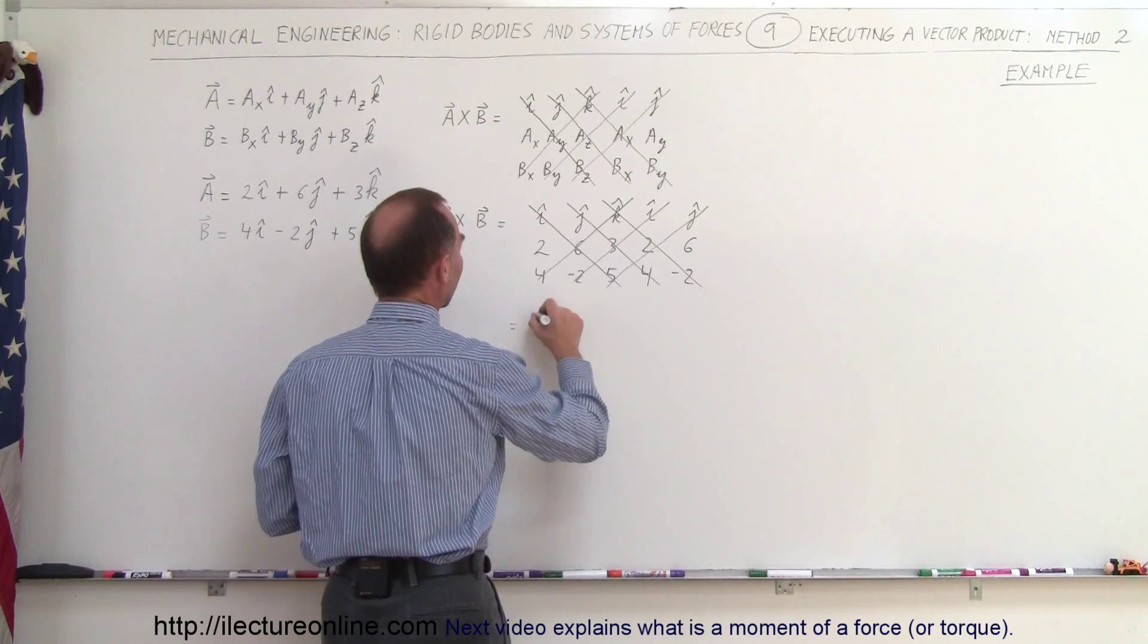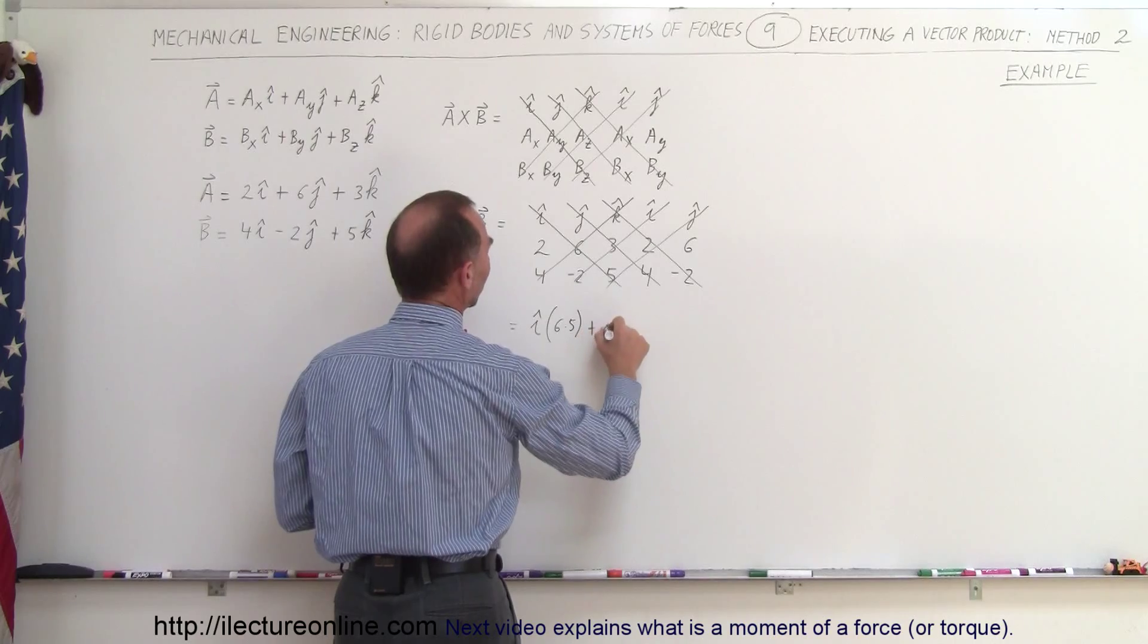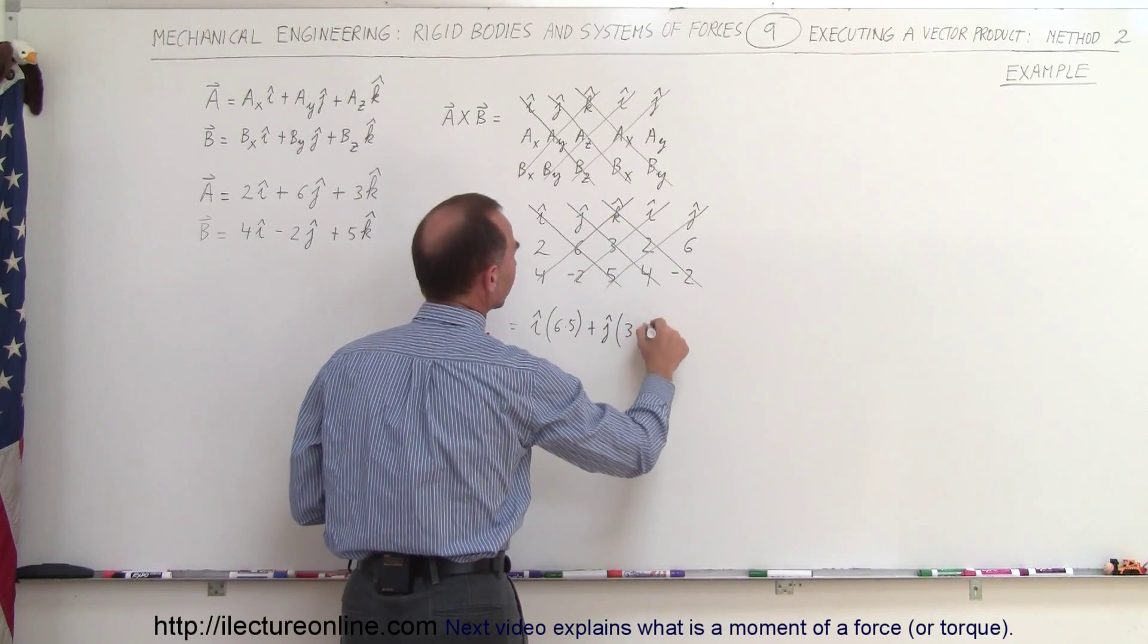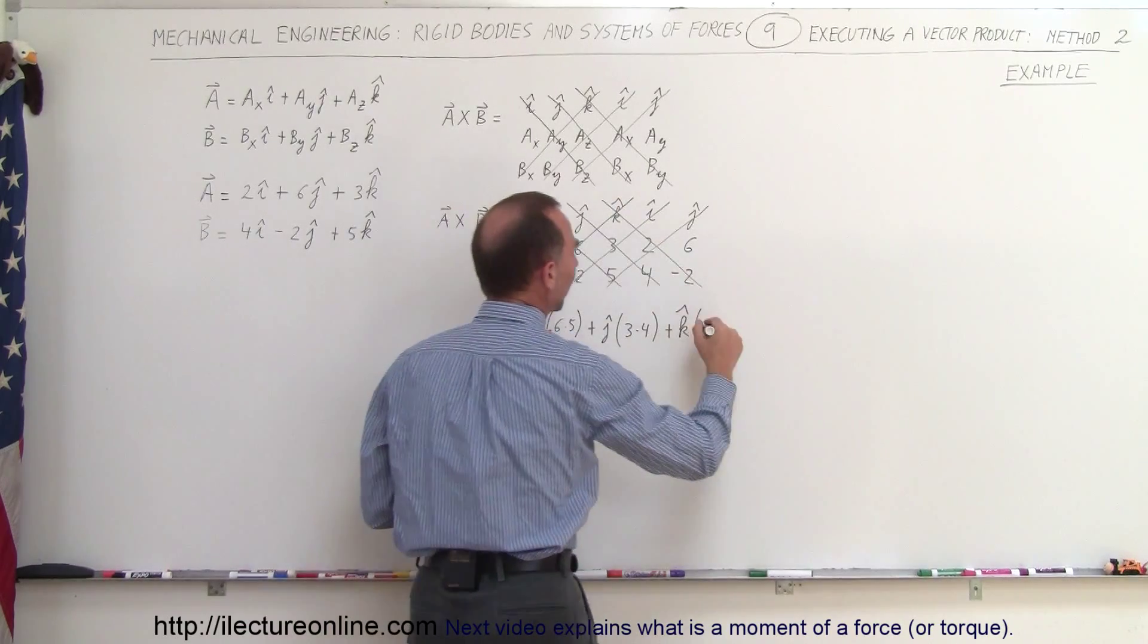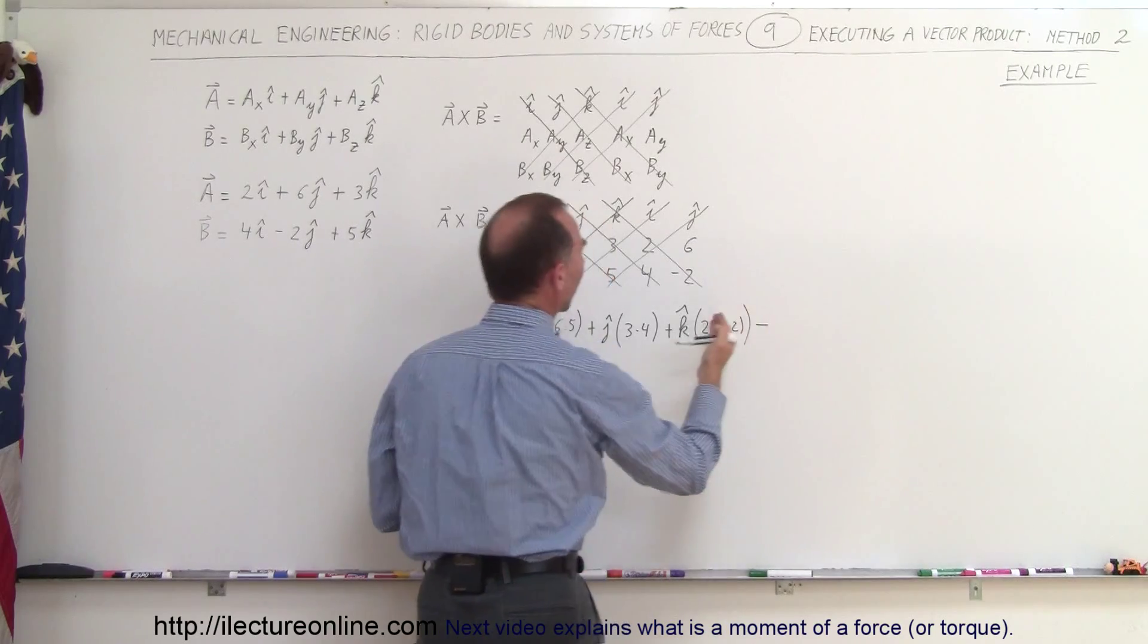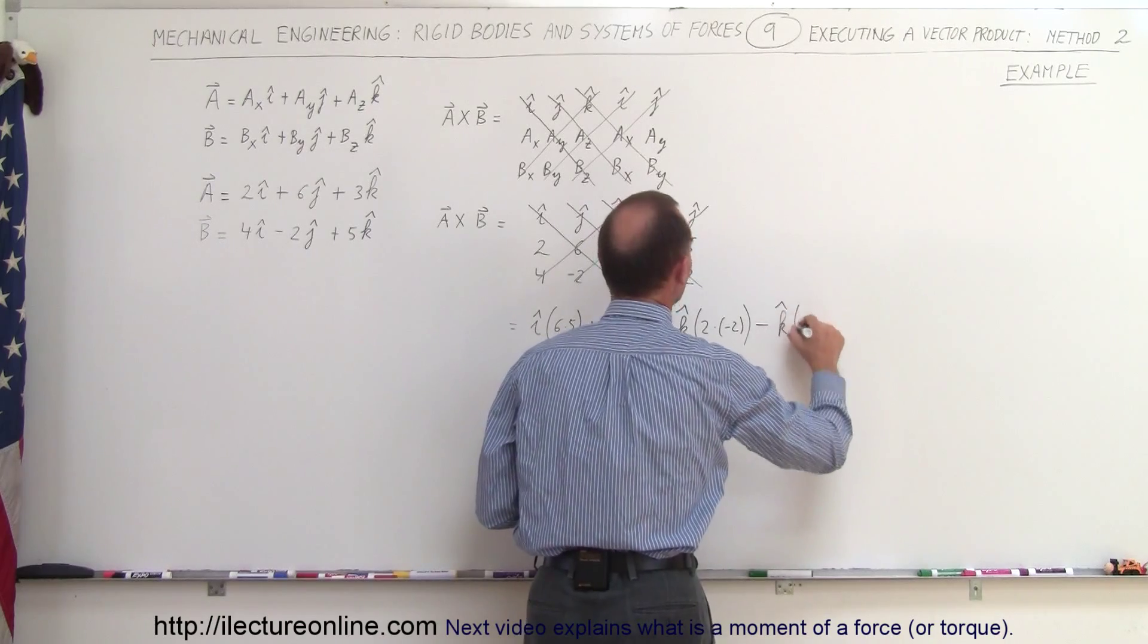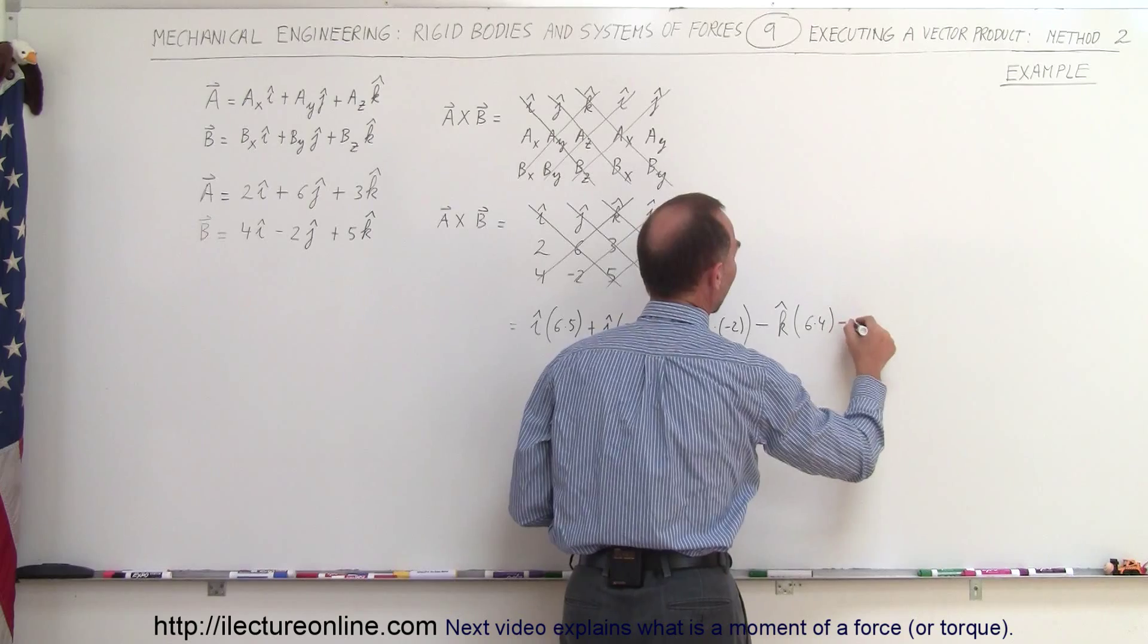This is equal to I times 6 times 5 plus J times 3 times 4 plus K times 2 times negative 2 minus, and I subtract when you multiply in this direction, so I have K times 6 times 4 minus.